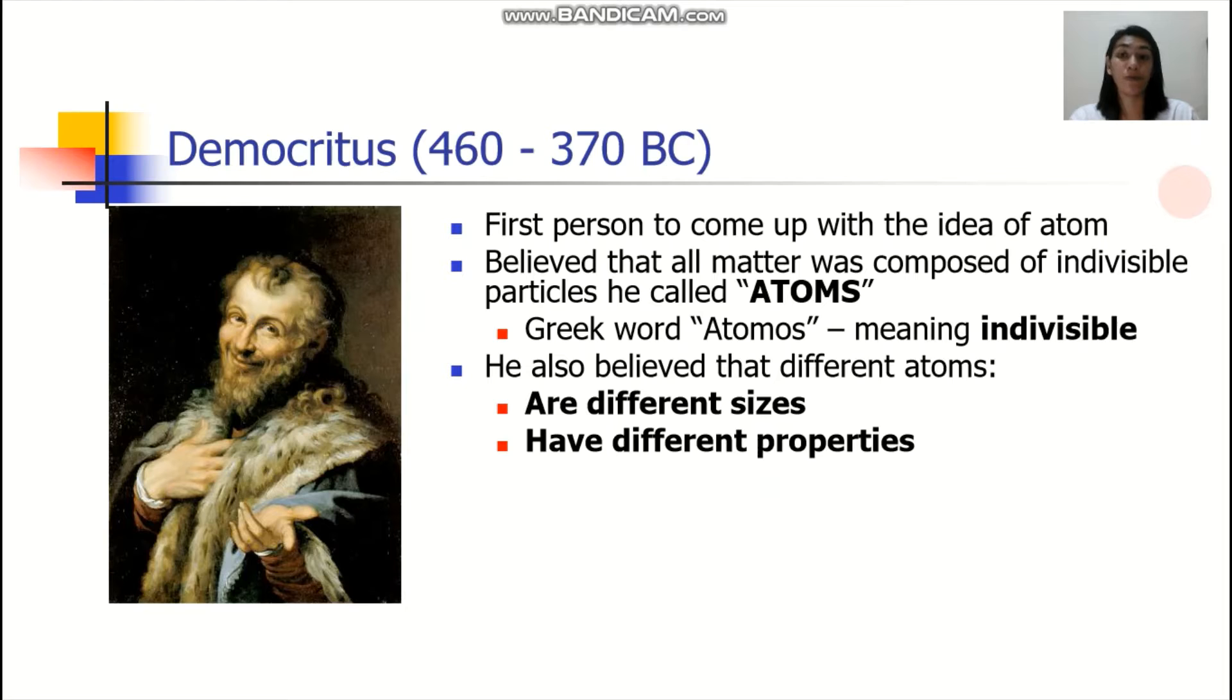There are different scientists who propose different atomic models. First we have Democritus. Democritus is actually the first person to come up with the idea of atom. And he believed that all matter was composed of indivisible particles called atoms or atomos.